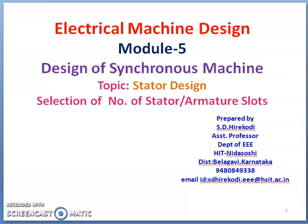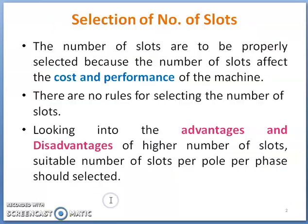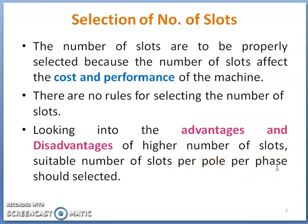Let us discuss how selection of stator slots is done under design of stator winding for synchronous machines. There are no definite rules for selecting the number of stator slots, but looking into the advantages and disadvantages of a higher number of slots, a designer can choose a suitable number of slots per pole per phase. If the number of slots is not properly selected, it will definitely affect the cost and performance of the machine.